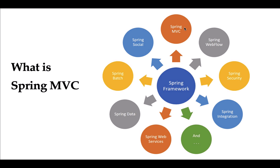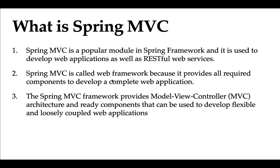All these modules in Spring Framework have their own purpose. For example, Spring MVC is used to develop web applications as well as RESTful web services. Spring Security is used to secure Spring-based applications. Spring Data is used to develop the persistence layer. Spring Batch is used to perform batch operations. Spring Web Services is used to develop SOAP web services. Spring MVC is one of the most popular modules.